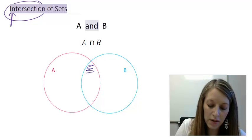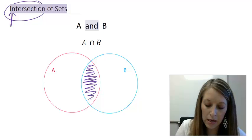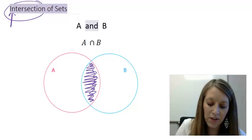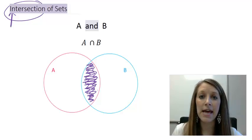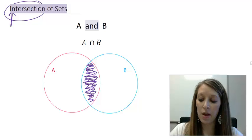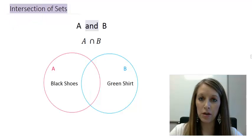So, the intersection of these two sets would be right here in the middle. It has to fit in set A and set B at the exact same time. So, to help you understand this, I kind of set up a real-world situation here.